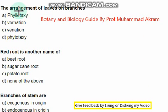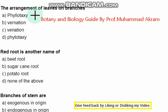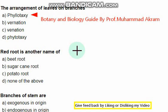Next question: the arrangement of leaves on branches is called — first option is the right one, option A: phyllotaxy. Phyllotaxy is the arrangement of leaves on branches. The next question: red root is another name of — first option is correct one: beetroot.